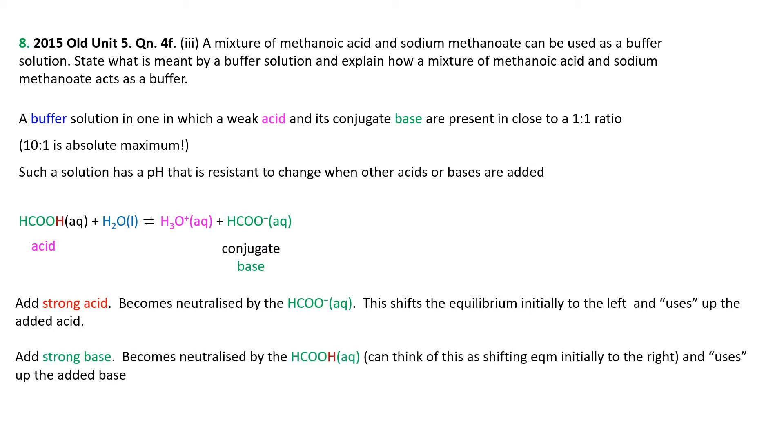The same idea if we add a strong base. If we add a strong base, that will be neutralized by the weak acid. As it's neutralized by the weak acid, it will make more of the conjugate base, so we can think about it shifting the equilibrium in that direction, using up the added base. After you've done all that, this mixture will reestablish equilibrium, in which you have less of the HCOOH and more of the HCOO minus than before, but the important thing is that the added strong base has been used up, so the effect of it is much much smaller than it would have been if you didn't have the weak acid there for it to react with.